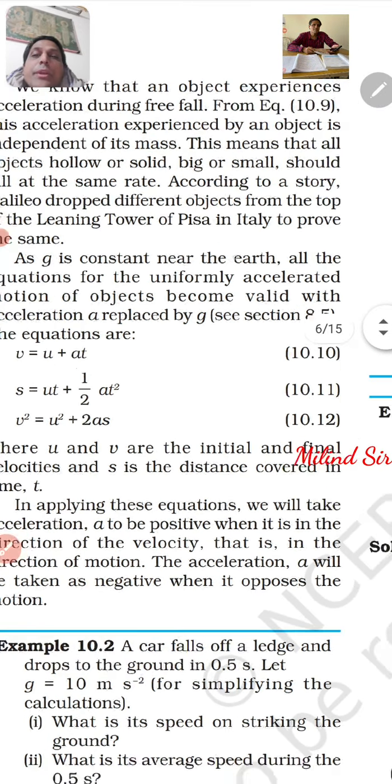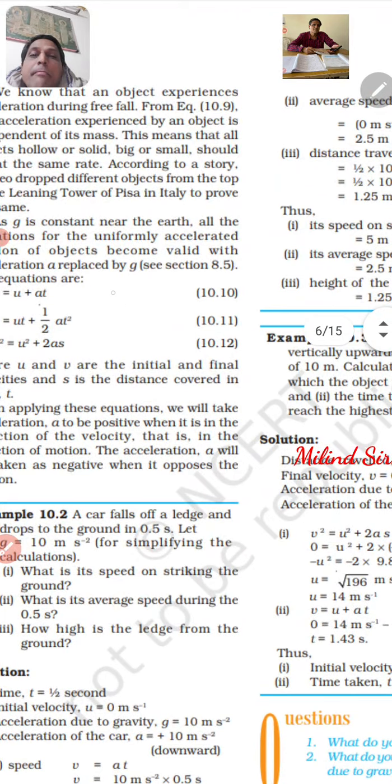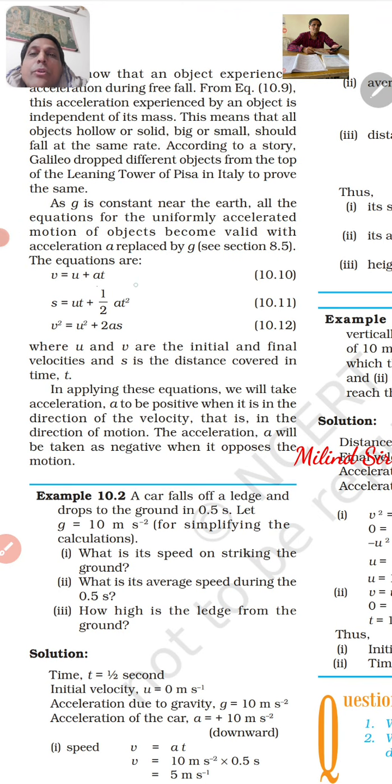According to a story, Galileo dropped different objects from the top of the Leaning Tower of Pisa in Italy to prove the same. In a story, Galileo had different objects from the top of the Leaning Tower in Italy.